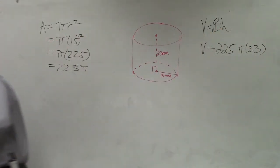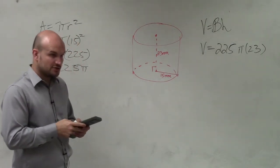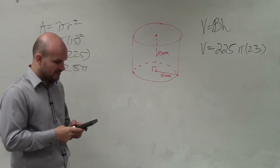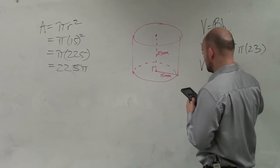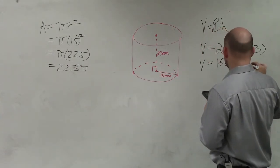All right, so now what I'll simply do is just multiply all of those together. So I do 225 times pi times 23, and I get a volume of 16,257.7.